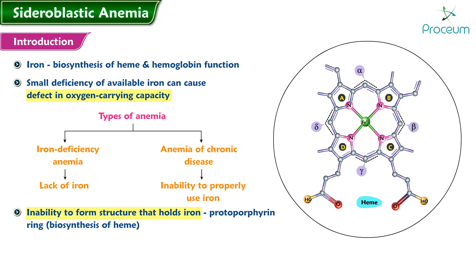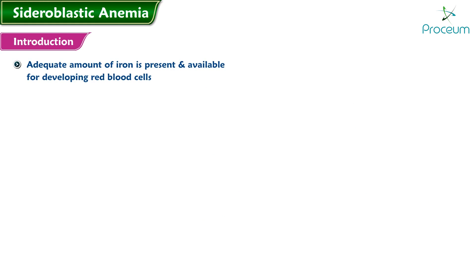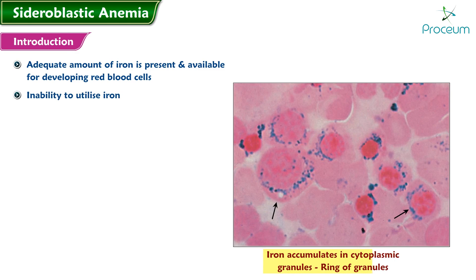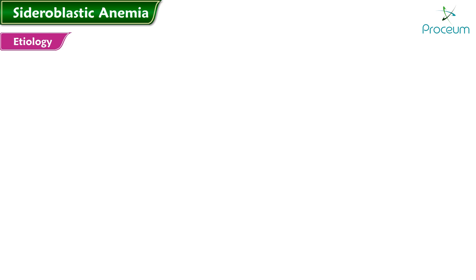Sideroblastic anemia is caused by an inability to form the protoporphyrin ring in the process of biosynthesis of heme. In sideroblastic anemia, adequate amounts of iron are present and available for developing red blood cells, but there is an inability to utilize the iron. Hence, the iron accumulates in cytoplasmic granules, eventually forming a ring of granules around the nucleus of the red cell precursor. Such cells are called ring sideroblasts, and they are the basis for the name sideroblastic anemia.